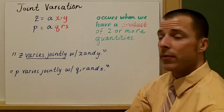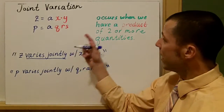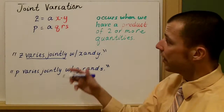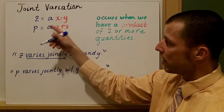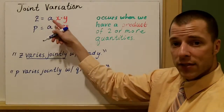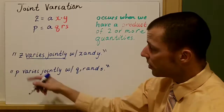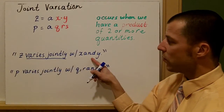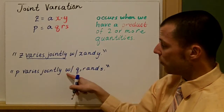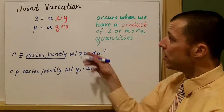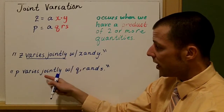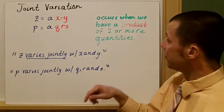The last part we're going to talk about is joint variation — that's when we combine two or more quantities using products. For example, z equals a times xy, and p equals a times qrs, where a is still your constant of variation. We read these as: z varies jointly with x and y, and p varies jointly with q, r, and s. We can also combine direct and inverse variation together.